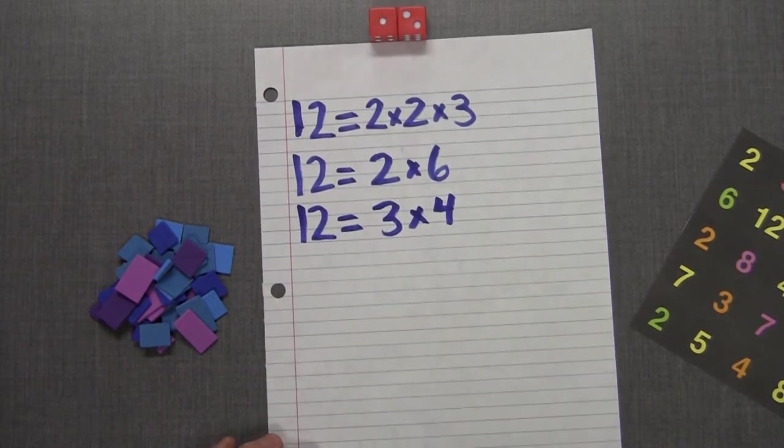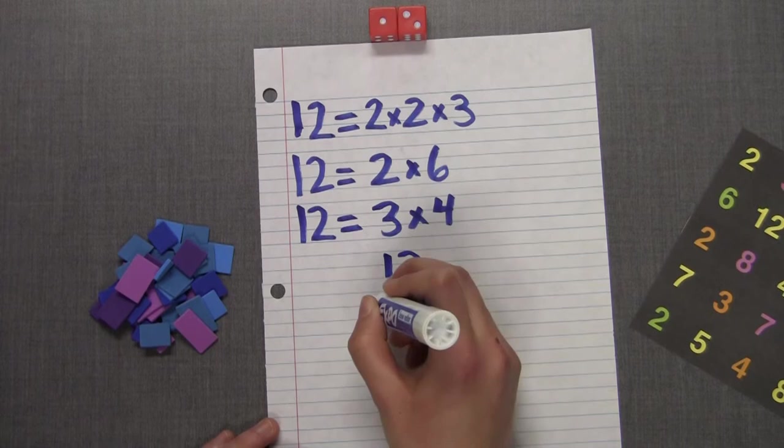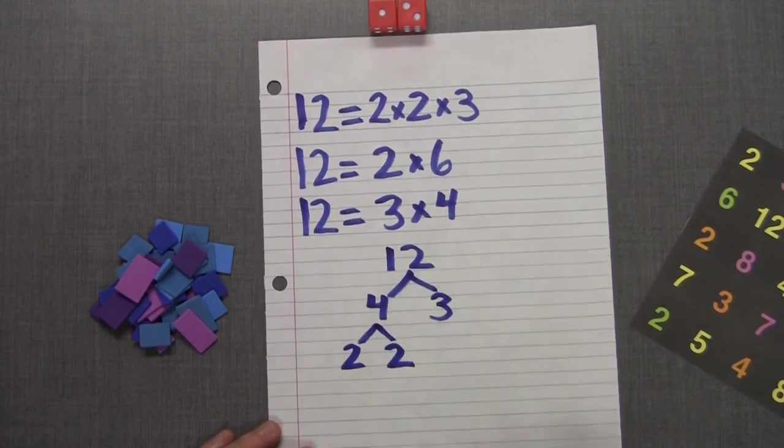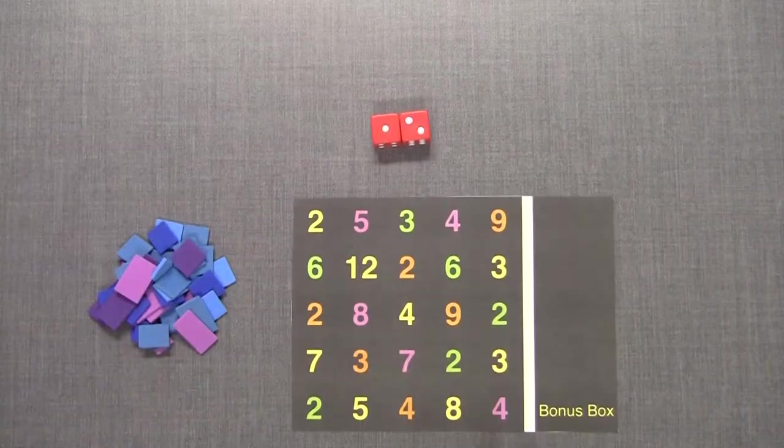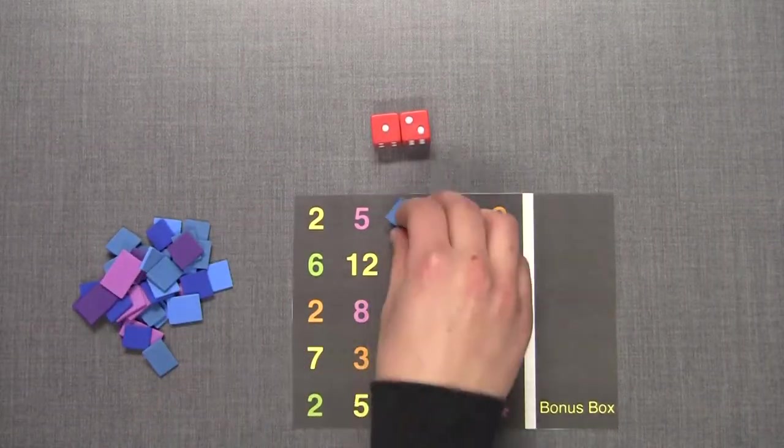Or you can create a factor tree. Choose factors that you want to use, say the factors out loud, and then cover them on your game board using the chips. As long as you can cover one number on the game board you can play.